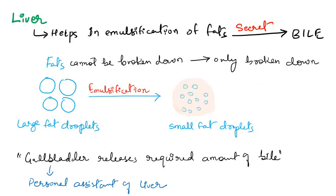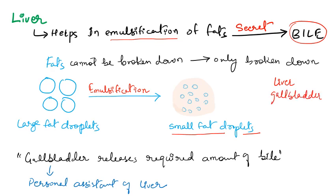Next comes the liver. Liver generally helps in the emulsification of fats. Fats cannot be broken down easily, but they can be emulsified. Larger fat droplets can be emulsified into smaller fat droplets. This emulsification process is done with the help of bile. Bile juice is secreted from the liver and gallbladder, and they combinedly help in secreting bile juice, which breaks down larger fat droplets into smaller fat droplets.